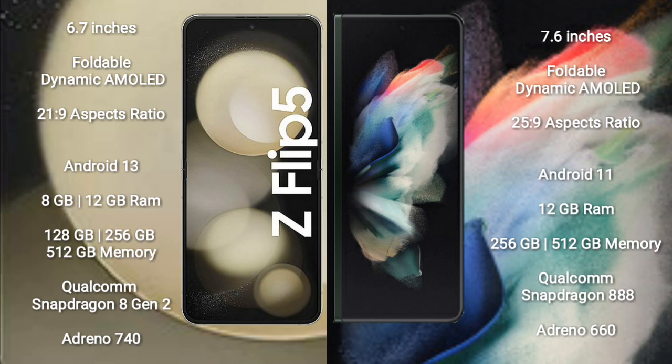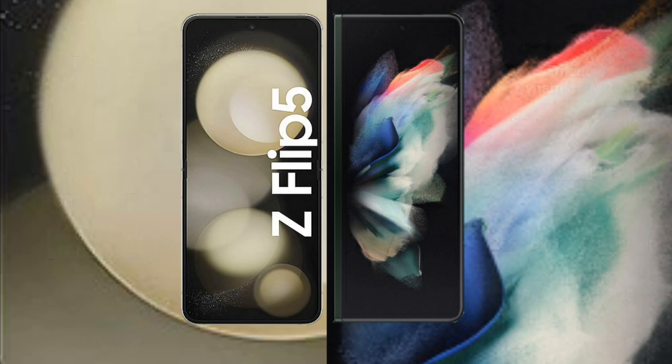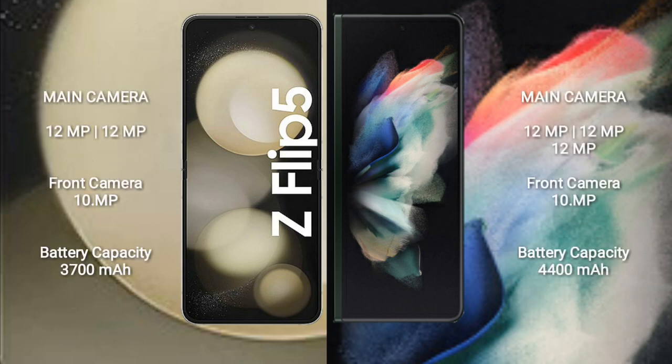The Samsung Galaxy Z Fold 3 comes with 12GB RAM and 256GB or 512GB internal storage. It features a Qualcomm Snapdragon 888 processor and Adreno 660 GPU. The Samsung Galaxy Z Flip 5 has a rear dual-camera setup.